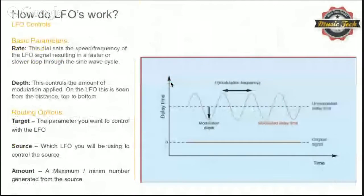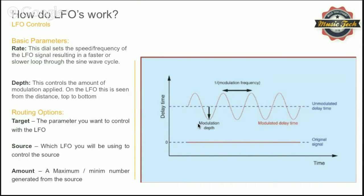The basic parameters of an LFO: you've got the rate, which is the speed or frequency — how fast it moves through the cycle per second. One cycle per second goes from this point all the way to this point. The depth is how high the modulation goes — distance from top to bottom. Now the routing is something we haven't really discussed before, so let's look at the routing specifics for synthesis. With routing, you have a target — what do you want the LFO to control. Sometimes this is called destination.